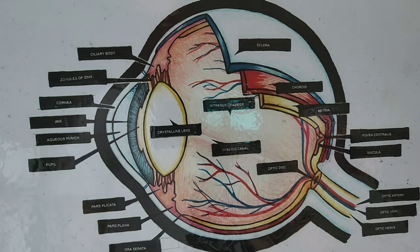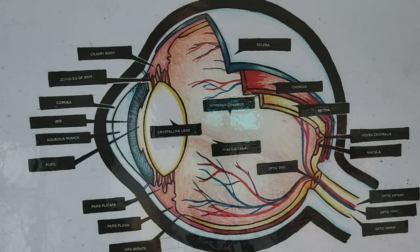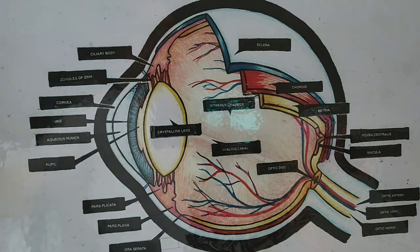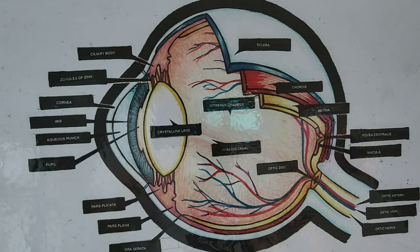Going back to the eye, the eye has what we call coatings. The coatings of the eye have different functions. We're going to start with the outermost layer or outermost coating of the eye.